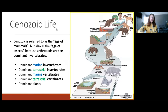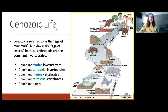Moving to Cenozoic life, the Cenozoic is referred to in terms of vertebrates as the age of mammals, and can also be referred to in terms of invertebrates as the age of insects. These are the two main dominant types of organisms for vertebrates and invertebrates respectively. We'll now talk about the events that occurred evolutionarily and biologically for the marine invertebrates, the terrestrial invertebrates, the marine vertebrates, the terrestrial vertebrates, and the plants.